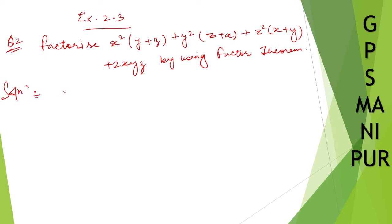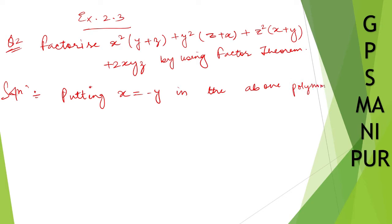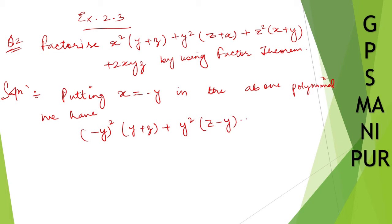So let us start by putting x equal to minus y in the given polynomial. So instead of x, putting minus y: minus y squared times y, plus z, plus y squared. So y squared z — instead of x put minus y — plus z squared, plus y, plus 2 times minus y times yz.